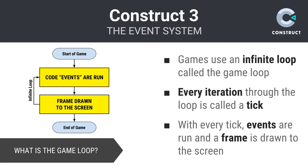It is fairly normal for a game to render 60-ish frames per second. But what is important to keep in mind is that you cannot rely upon a certain number of ticks to occur within a given time frame, nor can you infer anything about the actual passage of time by knowing the number of ticks that occurred. If you are curious about this, I recommend that you dig into Construct's tutorials on delta time and frame rate independence.